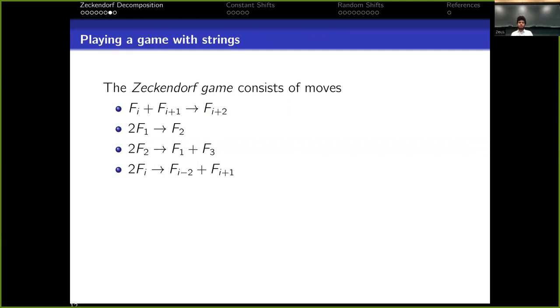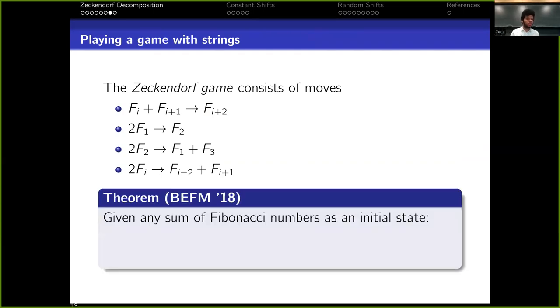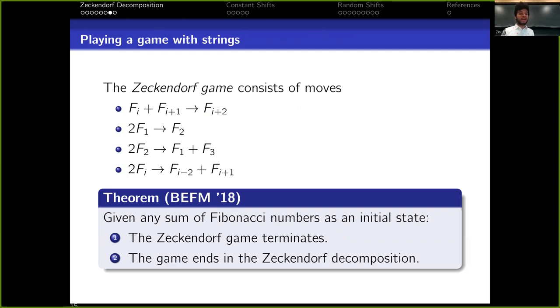So there's this thing that a previous model group studied, which was a Zeckendorf game, which consists of moves, which are these simplifications that I explained earlier. So we change two consecutives to the next one, we change two F₁s to F₂, two F₂s to F₁ plus F₃, two Fᵢ's for a larger variable of i to Fᵢ₋₁, Fᵢ₊₁. There's a theorem that the previous model group proved that given any initial state of Fibonacci numbers, so any sum that we give, if we apply those simplifications, those operations, the Zeckendorf game terminates, so we cannot apply those simplifications forever. And it terminates at the Zeckendorf composition. So that's another perspective that we get in Zeckendorf composition. How to get them, we can just play the game.